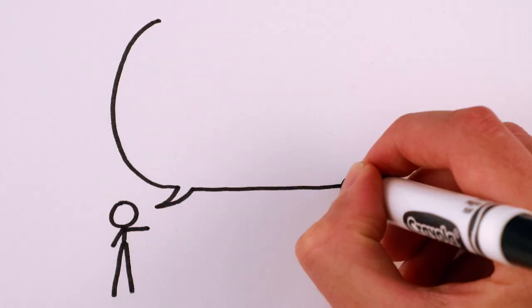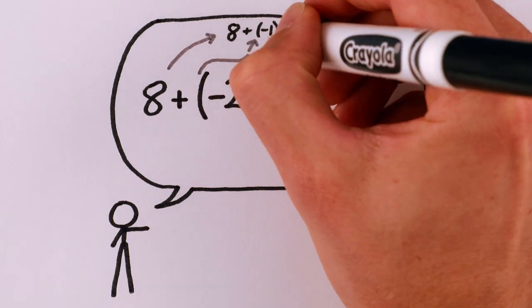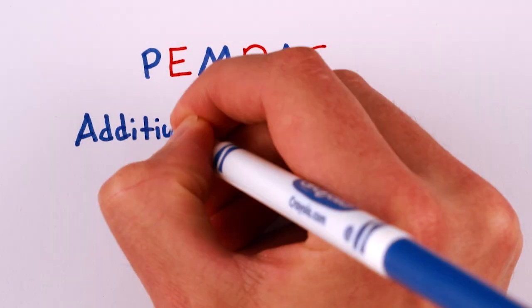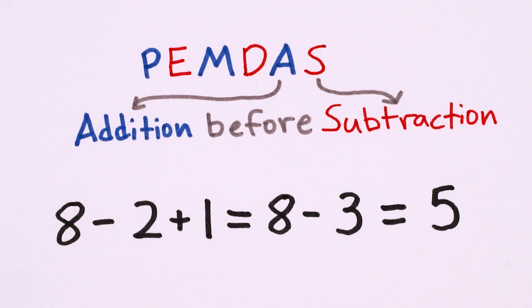A mathematician will tell you that 8 minus 2 plus 1 is really 8 plus negative 2 plus 1, which is unambiguously equal to 7, even though the so-called order of operations standard in the US tells you the answer is 5. If you want 5 for your answer, then you really need some parentheses.